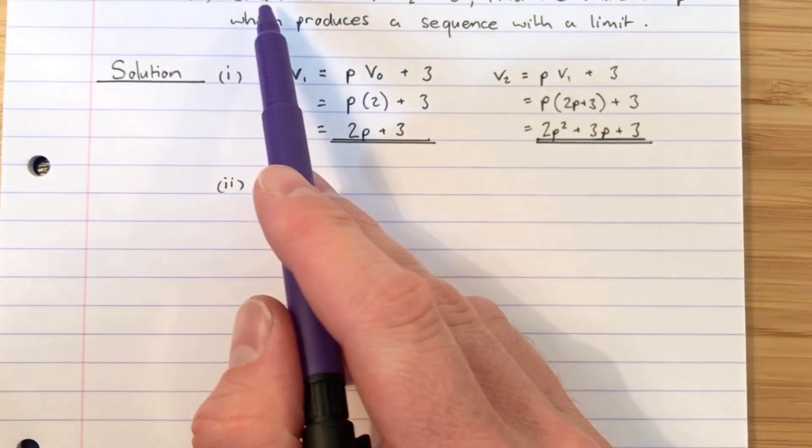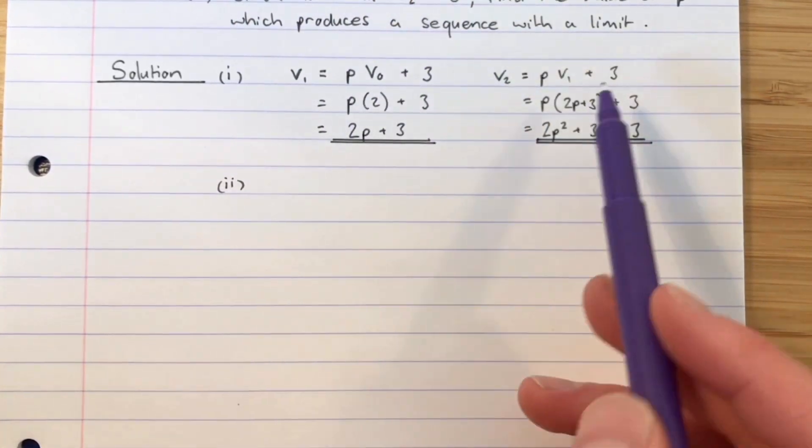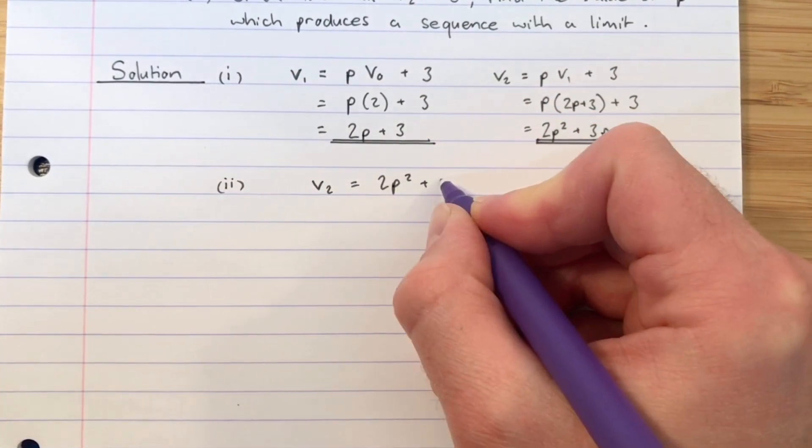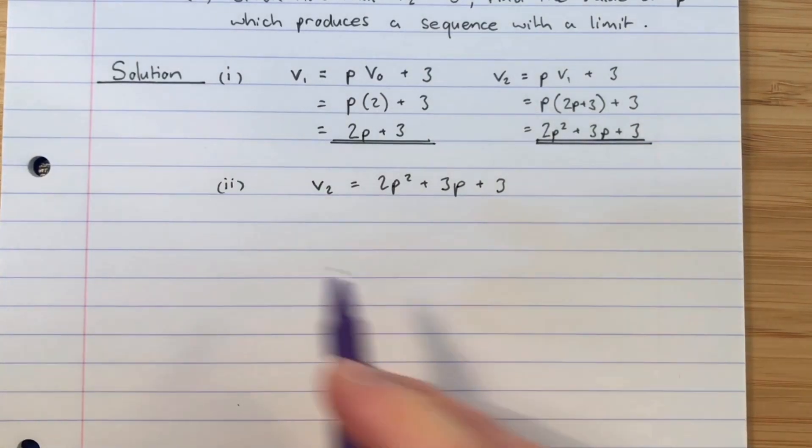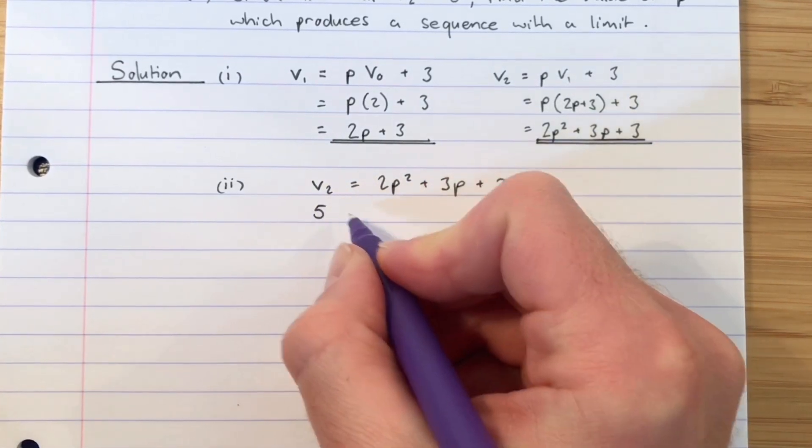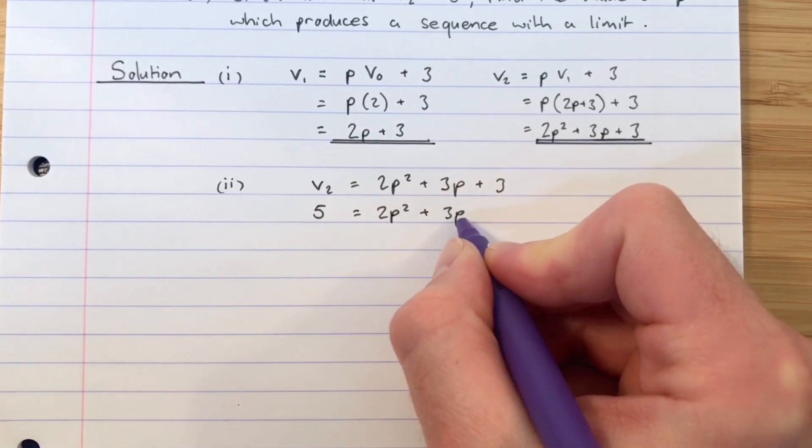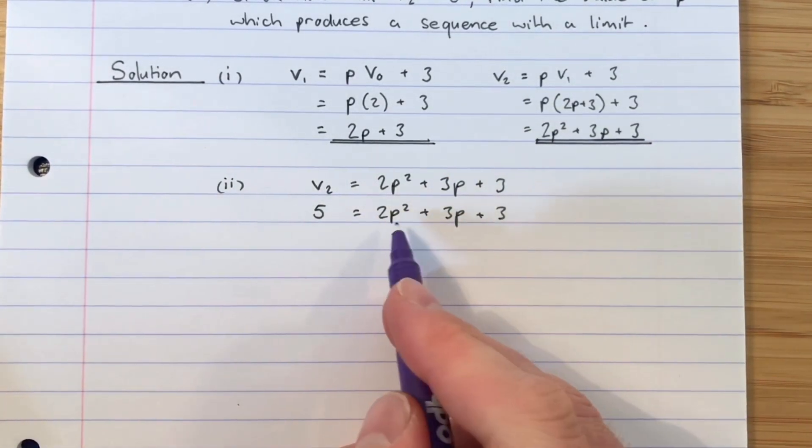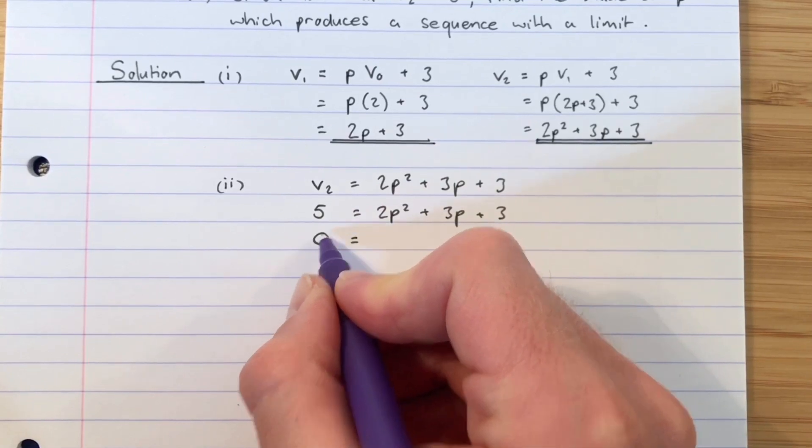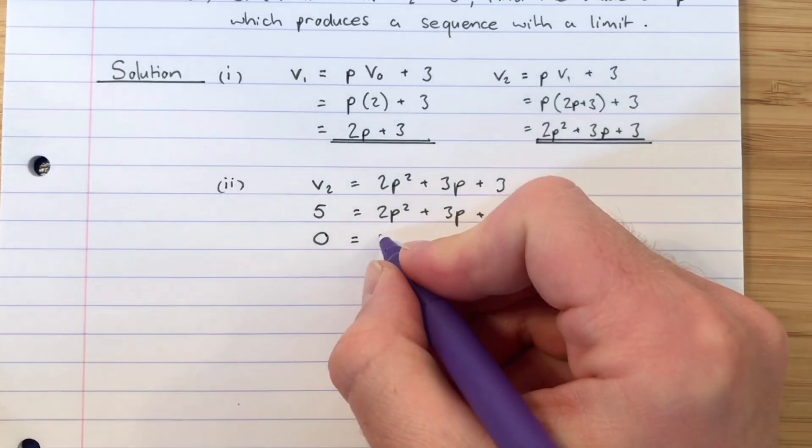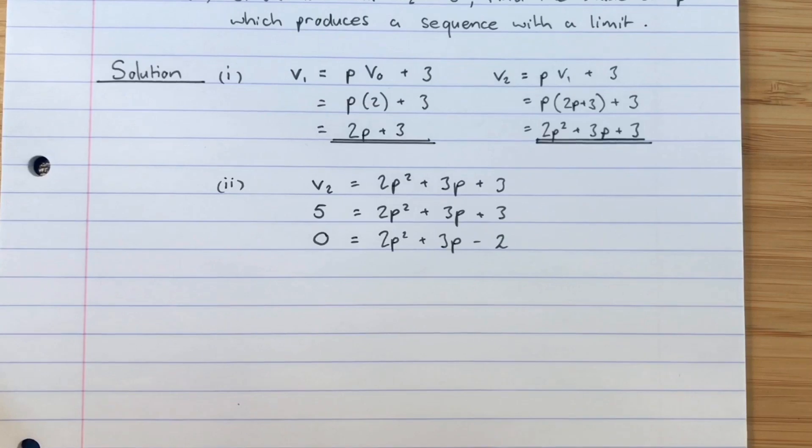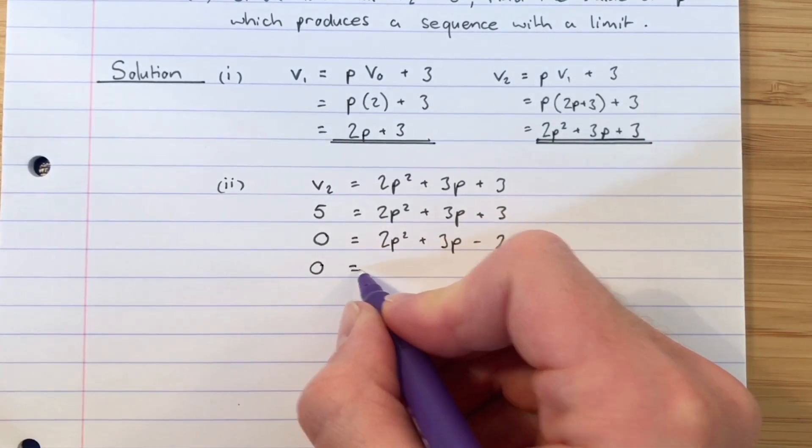For part two then I am going to use the fact that given now that v_2 equals five. So I'm going to say we worked out that v_2 was equal to 2p squared add 3p add three. They are now telling us that v_2 is equal to 5, so I can replace this with 5. So 5 equals that quadratic equation. How do we solve a quadratic equation? Always the same way, we want to get it equal to 0 which means the 5 is coming over to this side and subtracting. So 3 subtract 5 gives me negative 2 and now the way to solve the quadratic equation is to factorize.